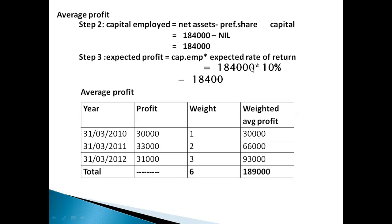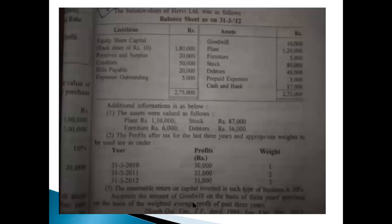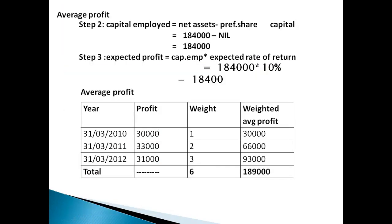Step 3: expected profit equals capital employed multiplied by expected rate of return. Capital employed is 1,84,000 multiplied by the reasonable return on capital investment in such type of business, which is 10%. Expected profit equals 18,400.